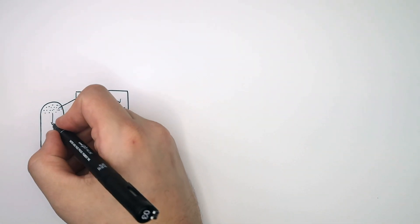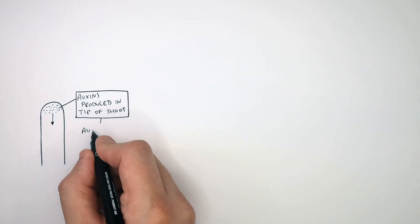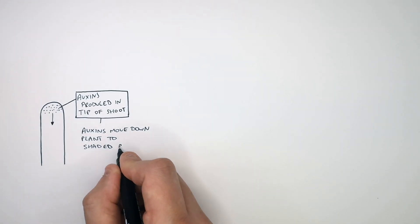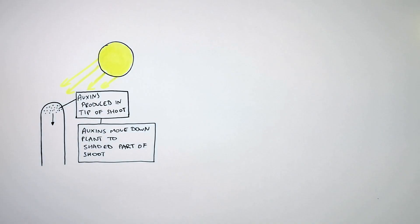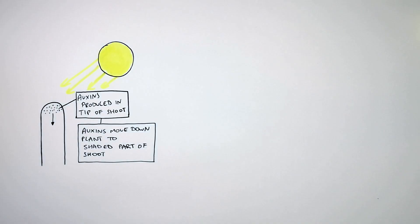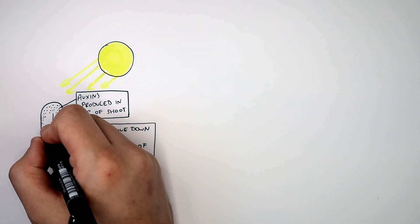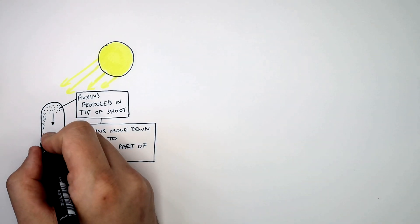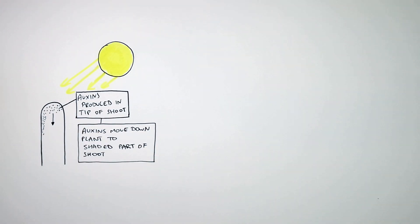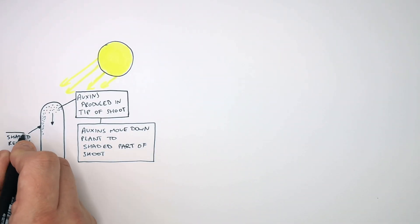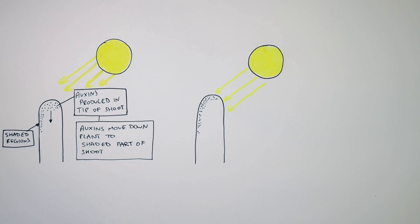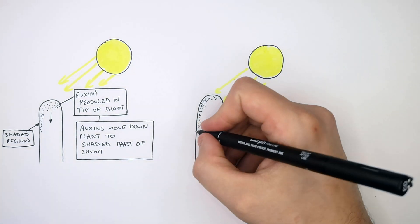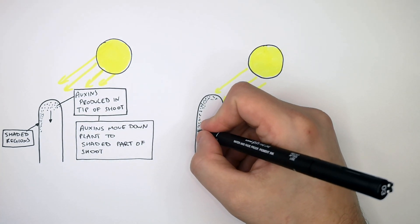The auxins are going to move down the shoot to the shaded region of the shoot. I've now added a light source. The auxins are going to move down the plant, but they're going to move to the shaded region. I've shown here that they're moving to the shaded region, and now the auxins have accumulated there.